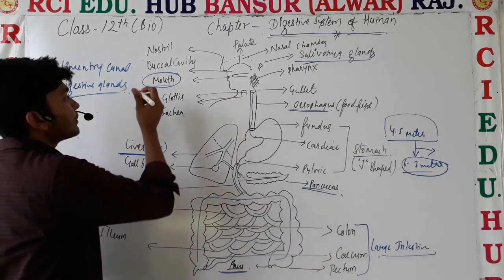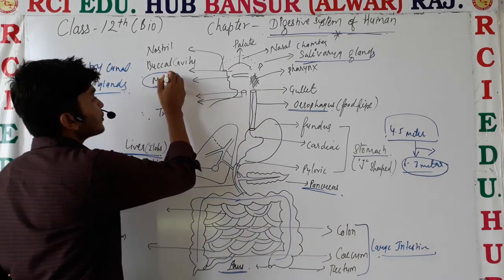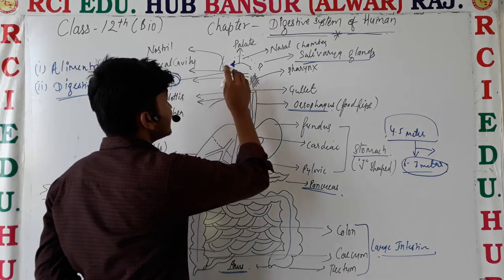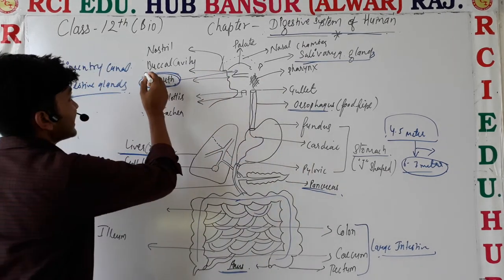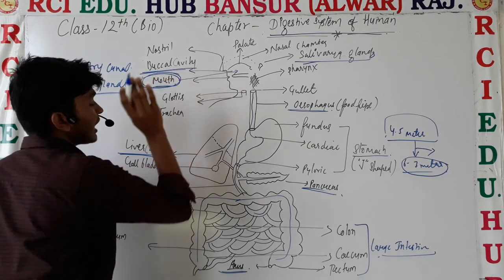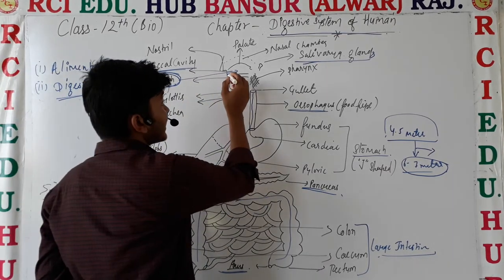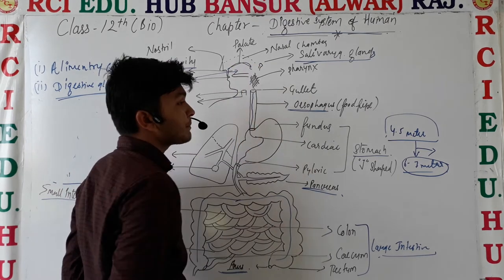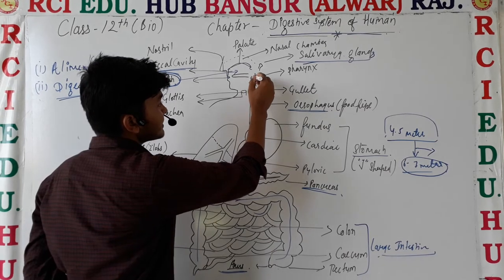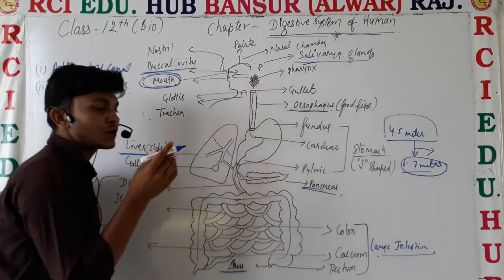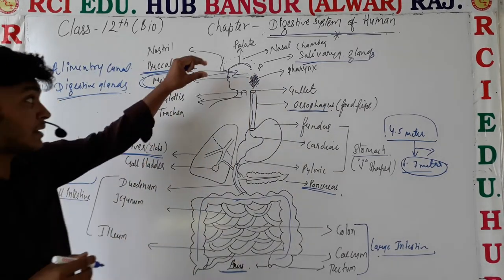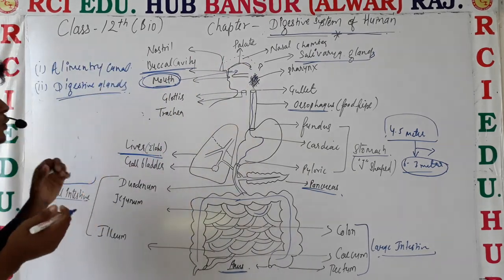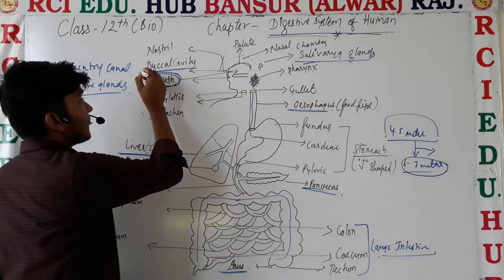The anterior opening of the digestive system is called the mouth. Just under the mouth, there is a cavity known as the buccal cavity. The buccal cavity is a groove-like structure surrounded on all sides — anteriorly by the mouth, superiorly by the palate region, posteriorly by the pharyngeal region, and inferiorly by the muscular organ, the tongue.